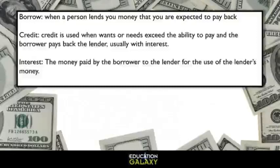If a person doesn't have enough money to pay for something, there are things they can do to get the money and pay at a later date. They can borrow money, which is when a person lends you money that you're expected to pay back. Credit can be used when wants or needs exceed the ability to pay, and the borrower pays back the lender, usually with interest. Interest is the money paid by the borrower to the lender for the use of the lender's money.